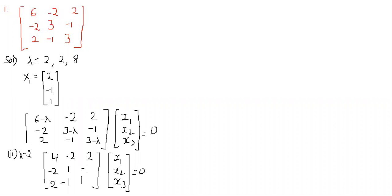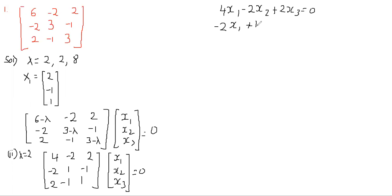Writing out the equations from the matrix: the first equation is 4x1 − 2x2 + 2x3 = 0. The second equation is −2x1 − x2 − x3 = 0. The third equation is 2x1 − x2 + x3 = 0.